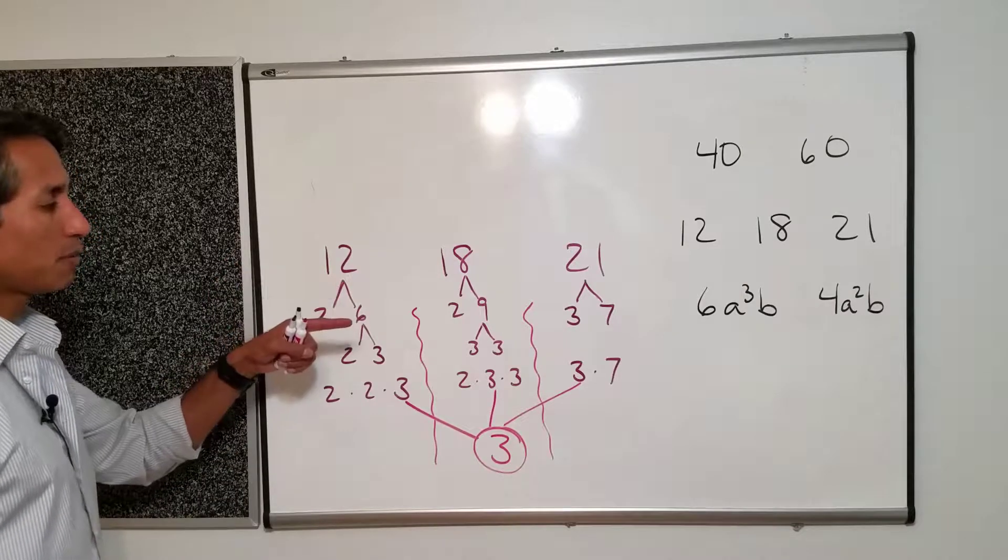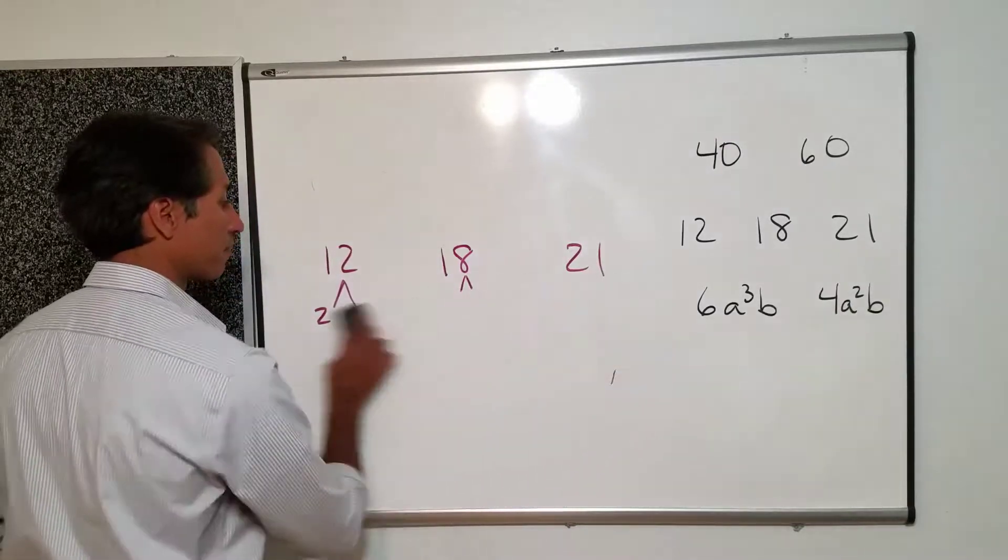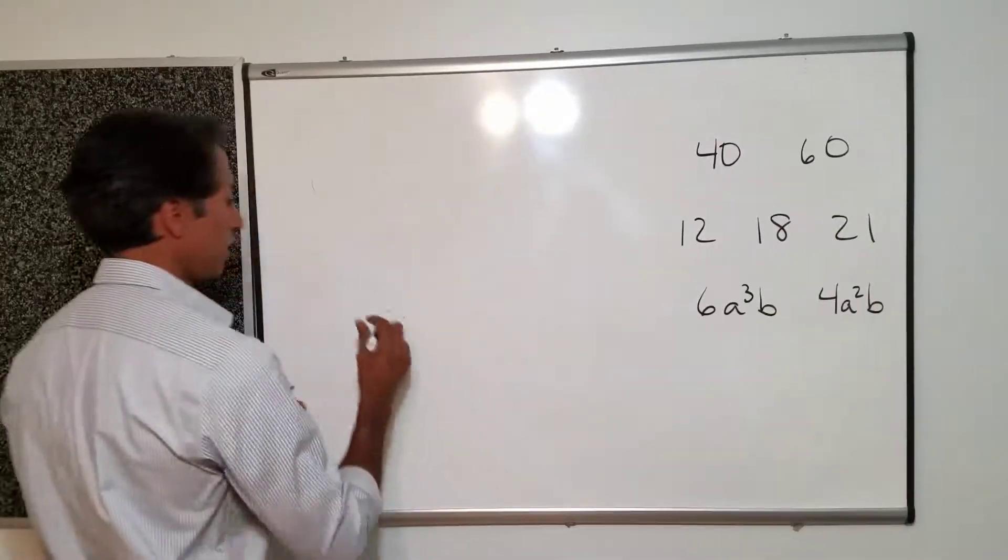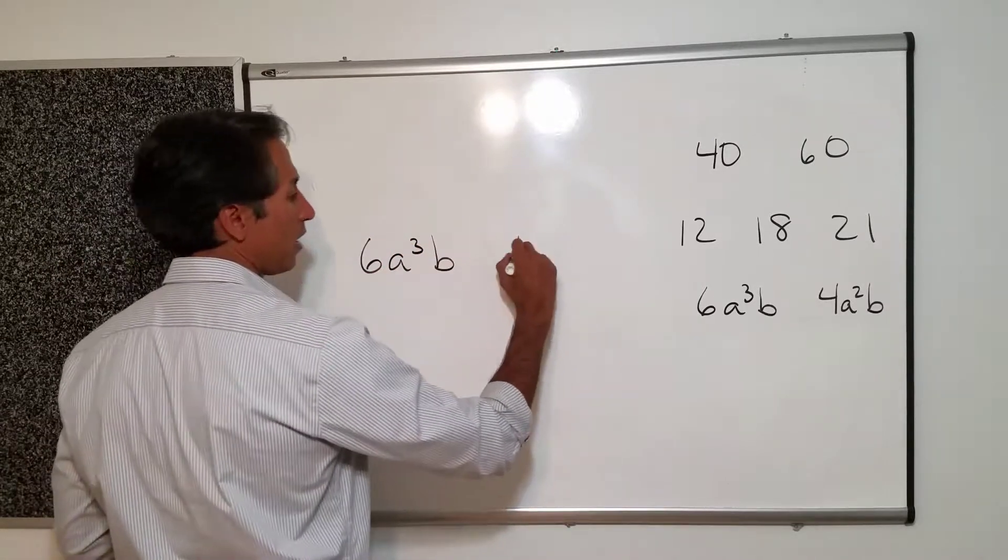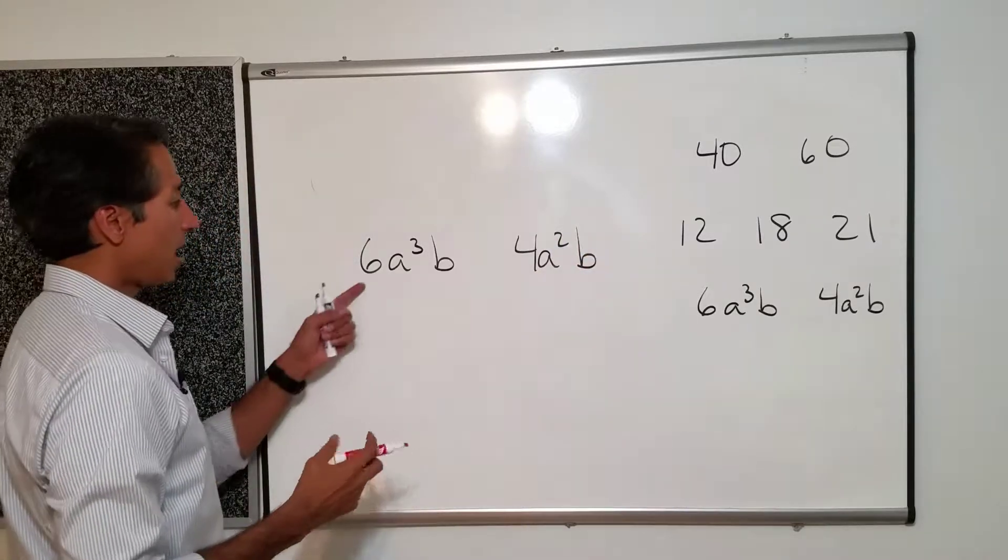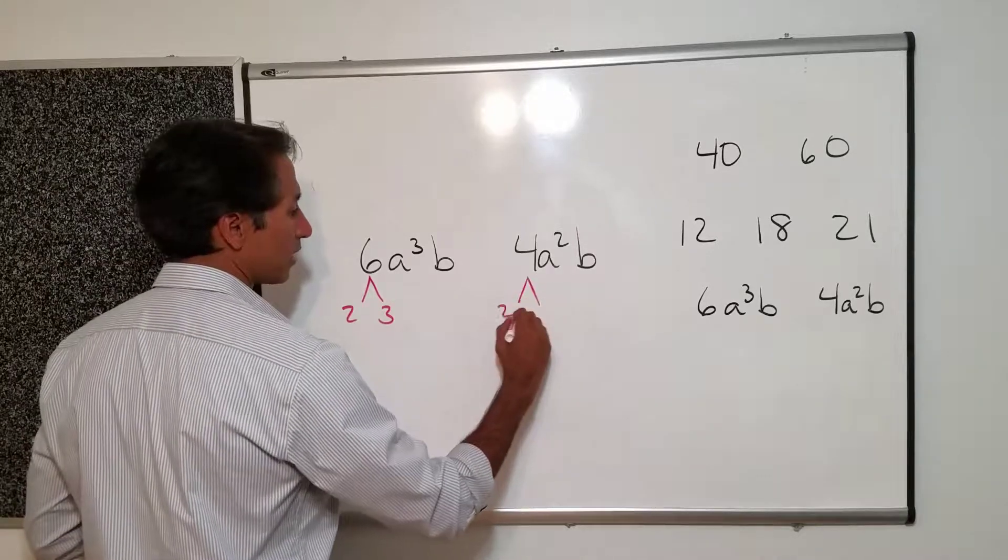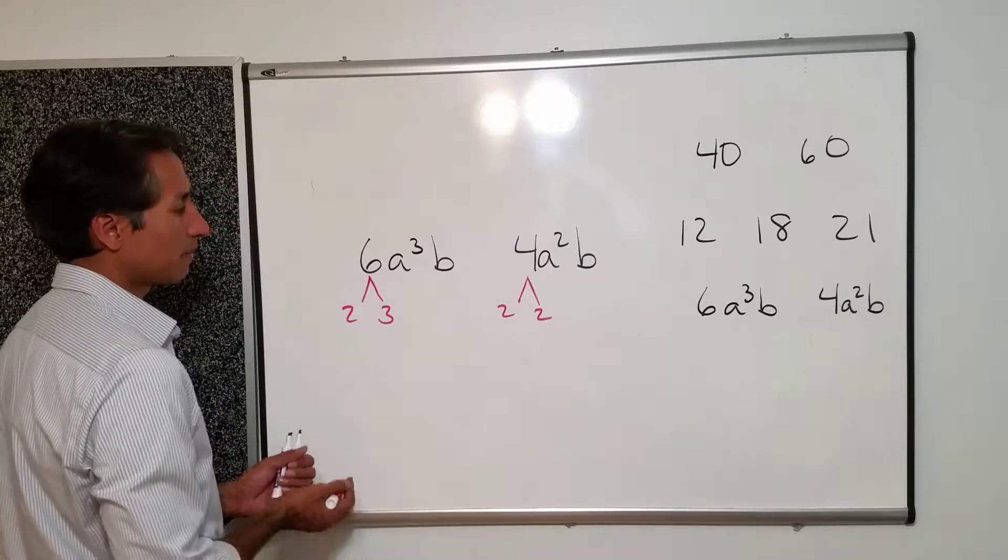Okay. So let's move on to that last guy over here. And wrap this thing up. I'll rewrite it here. We got 6a to the third b. And 4a squared b. I always recommend doing the numbers first. 2 times 3. This guy is 2 times 2. And then working with these ones separately.